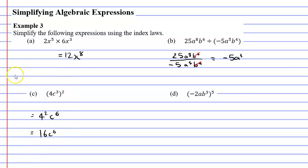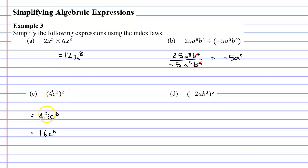Just a little side note: notice that the 4 didn't have a power. If you don't have a power, it technically has a power of 1 because there's only one 4. So when you think about it, we did 3 times 2 to get 6. We actually did the same thing for this 2 here — we did 1 times 2 to get 2.